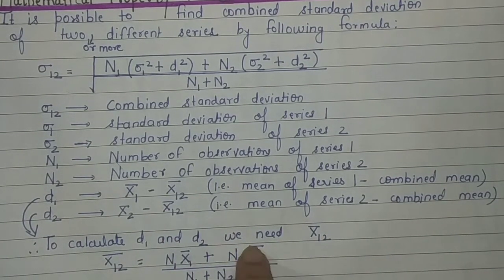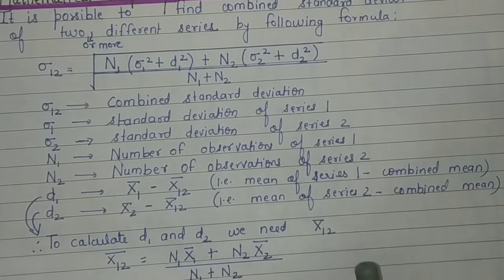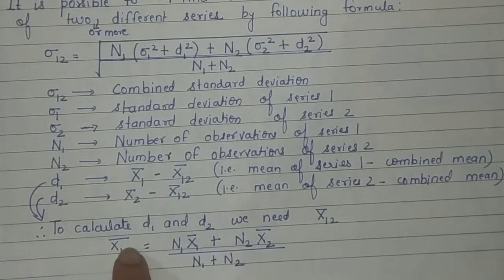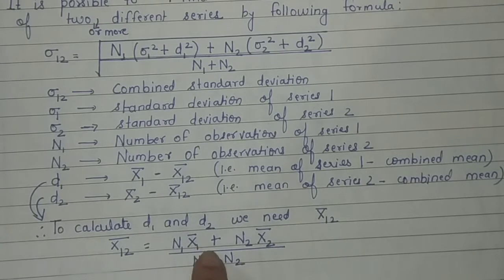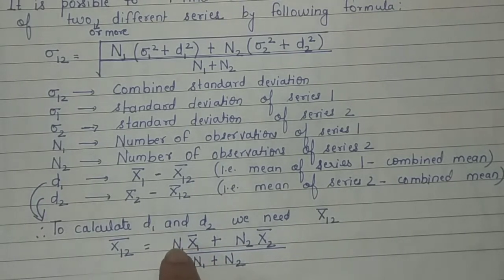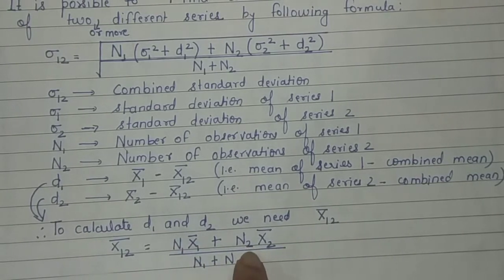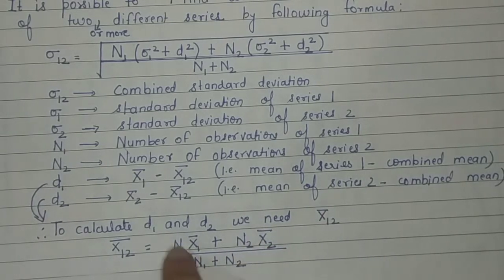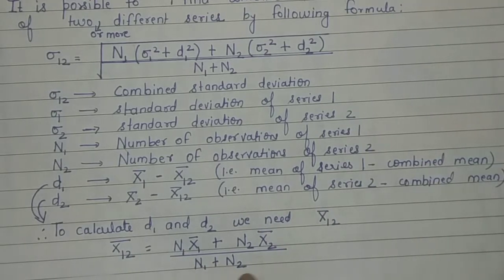To calculate d1 and d2, we first need the individual means and the combined mean. The combined mean formula is: x̄₁₂ equals n1·x̄₁ plus n2·x̄₂ in the numerator, divided by n1 plus n2 in the denominator — which I have explained in my previous videos.